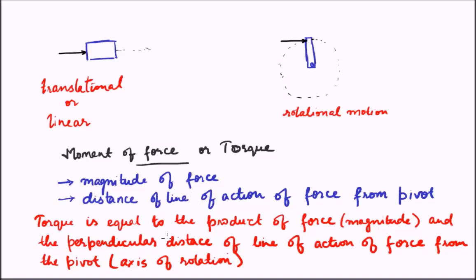Let us see a little more into the definition. It says torque is the product of the magnitude of force and the perpendicular distance of the line of action of force from the pivot. In this example, the line of action of force is the direction in which force is applied, and the perpendicular distance of the line of action of force from the axis of rotation is this particular distance.